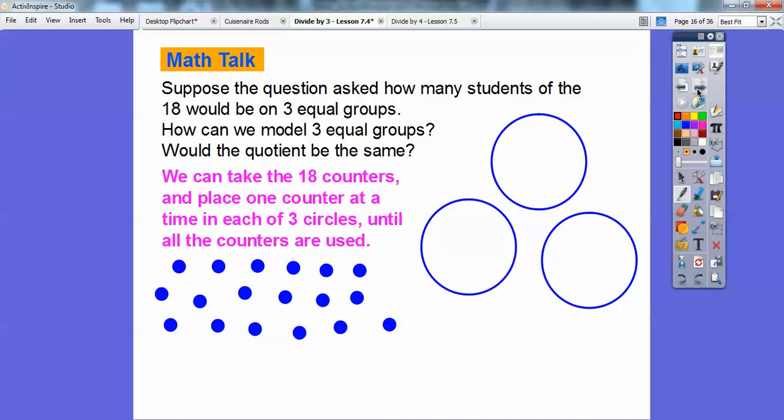Here's how we can model this. We can take the 18 counters for the 18 students and we can place one counter at a time in each of the three circles until all the counters are used. So if I put a counter there, a counter there, a counter there, there's one counter at a time in each of the three circles. So I just keep doing this until the rest of them fill up.